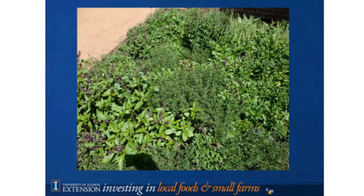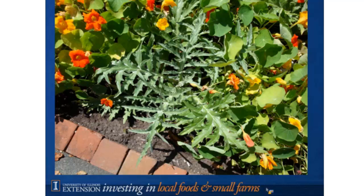If you look at this picture, it appears we have a poppy planted amongst some nasturtiums. That poppy doesn't like to have its roots get very hot, so the other flowers surrounding it provide shade. That shade results in cooler root temperatures and better soil moisture, allowing that plant to thrive.